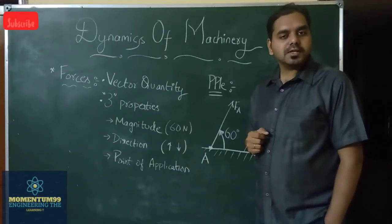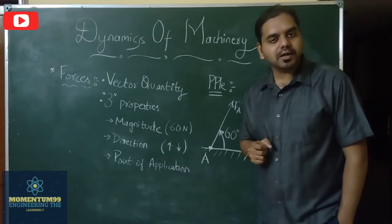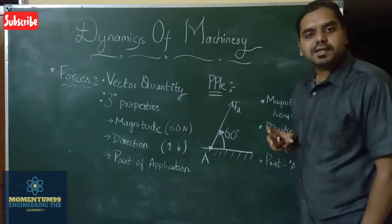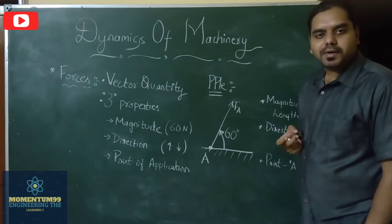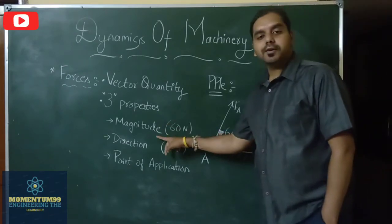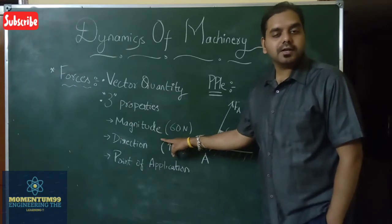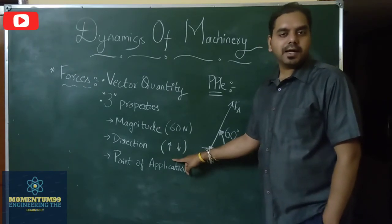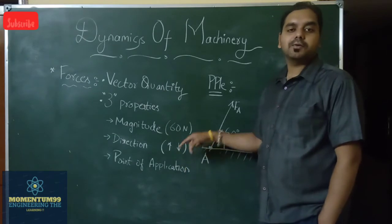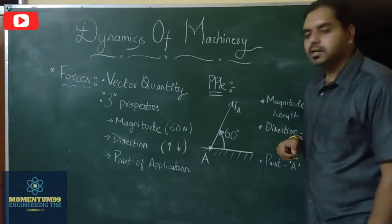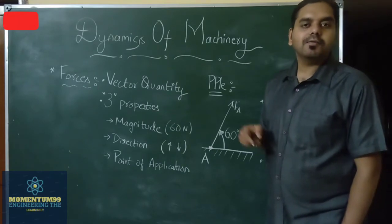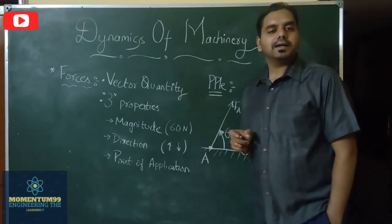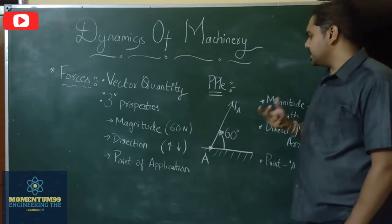Next, we will see what is meant by a force and the different properties required to define it completely. Forces are generally vector quantities, which can be completely defined using three properties: magnitude (expressed in Newtons, e.g., 60 N or 100 N), direction (the direction of the arrowhead used to represent the force, whether acting towards or away from the point), and point of application (at what reference point the force is acting).